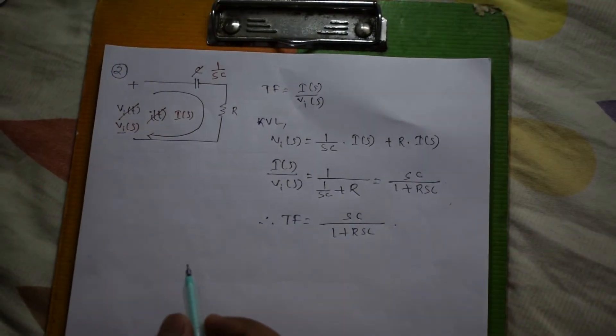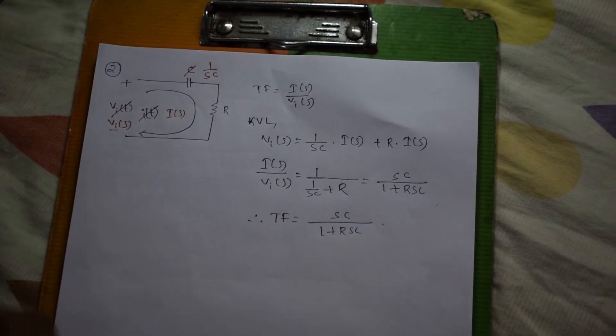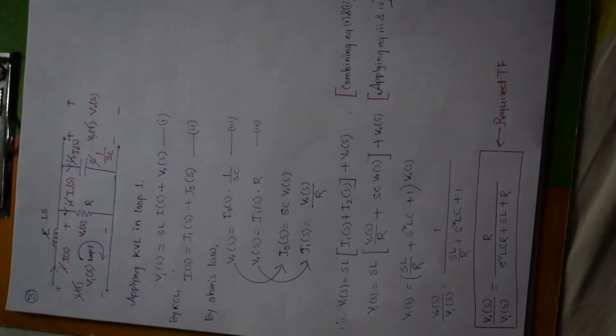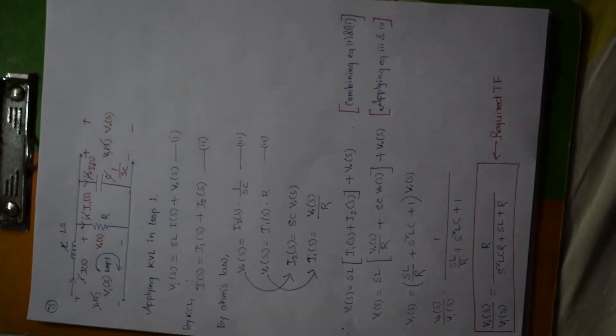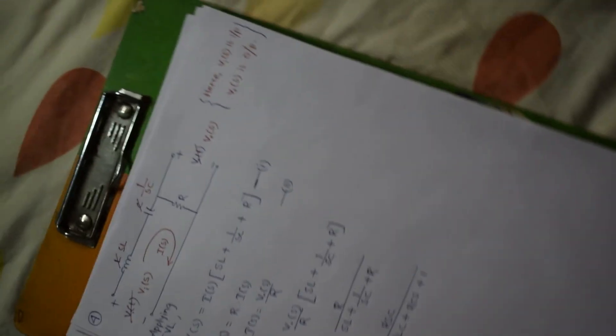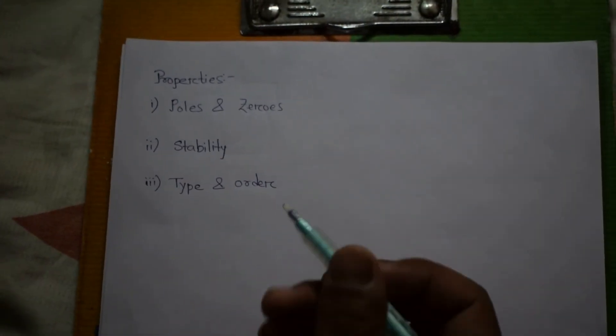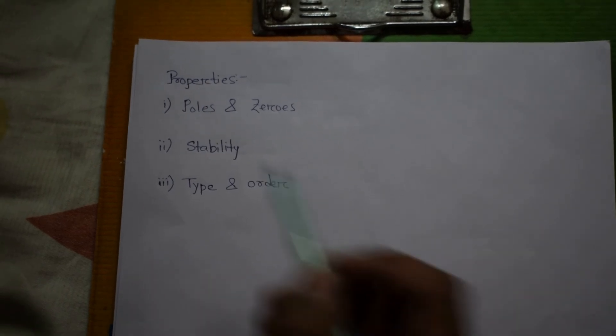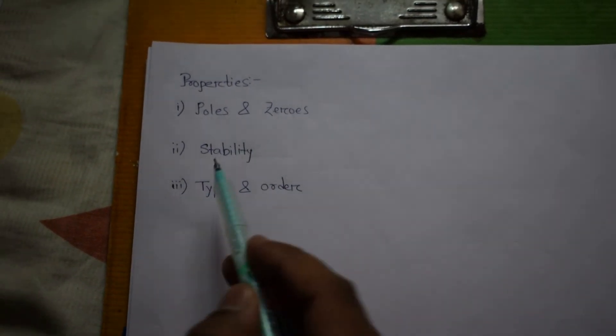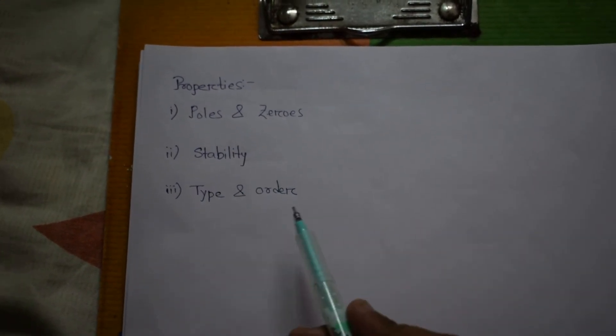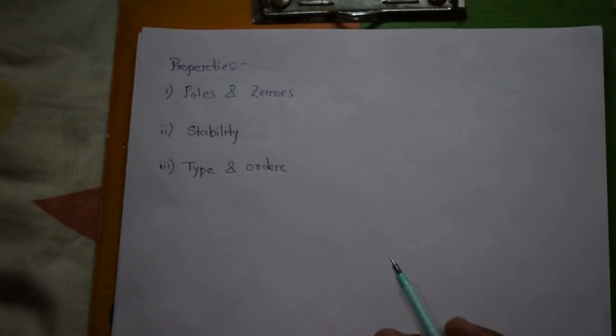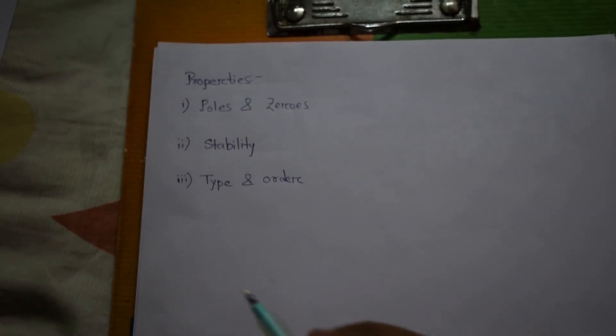So friends, now we know how to write the transfer function. Here are few more examples so you can refer to this. Some of the important things which we can get from a transfer function is that we can find poles, zeros, stability of the system, types and order also. We will see all these in the upcoming videos.